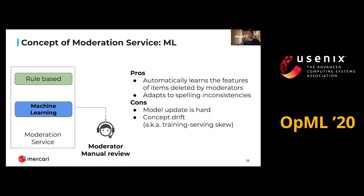Machine learning systems can solve rule-based issues. The pros are that they automatically learn features of items flagged by moderators and also adapt to spelling inconsistencies. But machine learning also has cons: model updates are hard, and concept drift also occurs — also known as training-serving skew. In this talk, we propose solutions to those issues — model update difficulty and concept drift — in real-world content moderation.